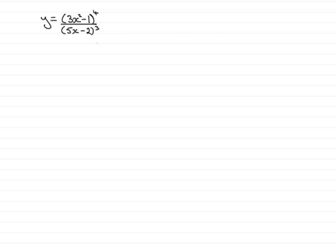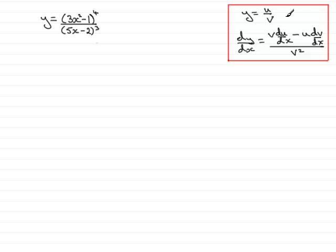What is the quotient rule? You'll find it in most formula books, but I would encourage you to try and learn it. If you have y equals u over v, where u and v are two functions of x, then u would be (3x squared minus 1) to the power of 4, and v would be (5x minus 2) to the power of 3. Then dy/dx is always equal to v times du/dx minus u times dv/dx, all over v squared.